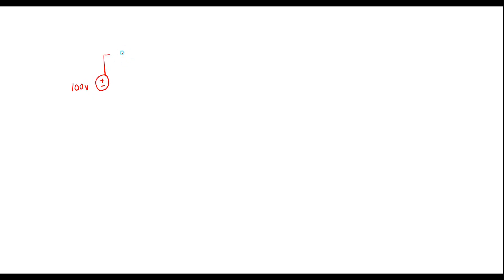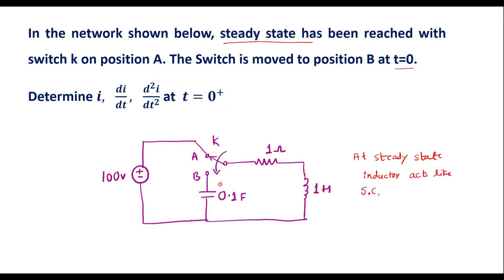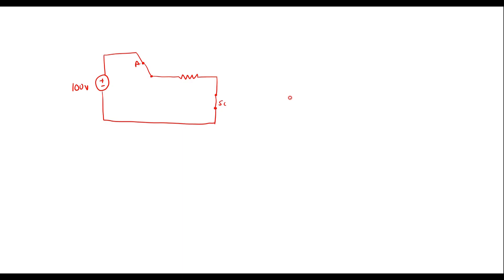I can draw it as: here it is connected to a 100 volt source, this is position A, this is the switch and here we have a resistor. There was an inductor — it is short circuited. This is the circuit when it is at steady state. As switch is connected to position A, there is no voltage in the capacitor, so voltage across this capacitor is 0. Now let me find current in the circuit. The resistor value is 1 ohm.